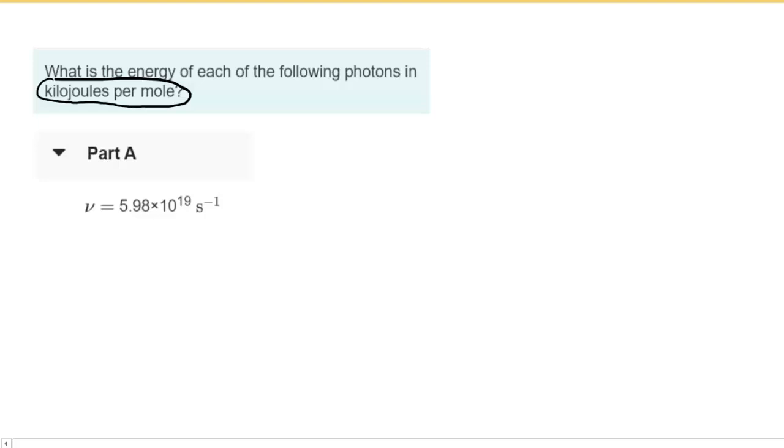The first piece of information given in part A is that the frequency of the photon is 5.98 times 10 to the 19th inverse seconds. It's important to note that this V-looking letter is the frequency of the photon.